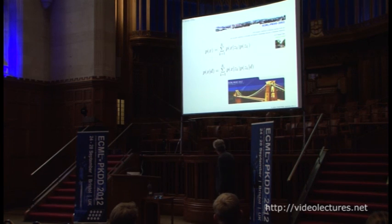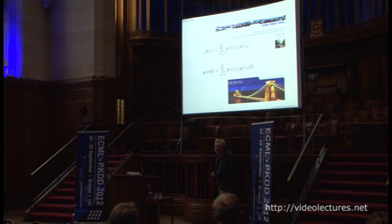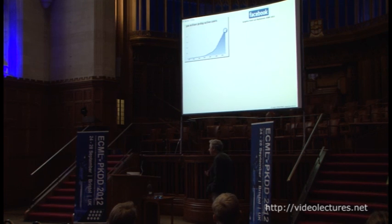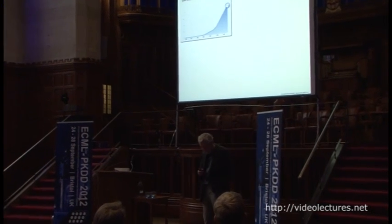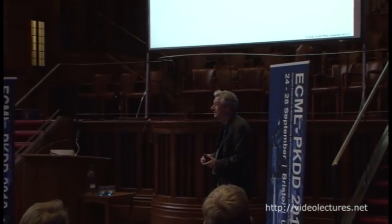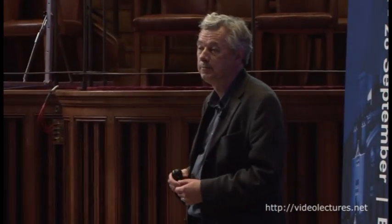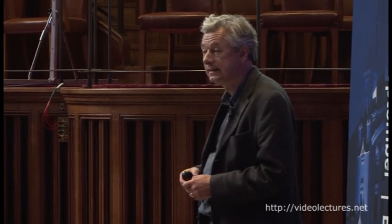This is basically the topic model equation where the mixture coefficients depend on the individual document rather than being global. Let me start by motivating the talk with a few examples. I picked Facebook because there happened to be some nice slides, but there are many other datasets like this. Computer science really is changing rapidly, and machine learning and data mining are a big part of that, as these datasets are a forcing function on us in terms of what we're going to do with all of this data.